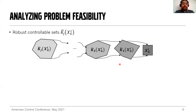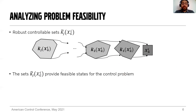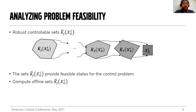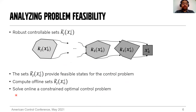The intuition behind robust controllable sets is: for a certain goal set XG, the J-th robust controllable set K-tilde is the set of admissible states for which an admissible control input exists that can robustly control the states to enter the goal set XG in at most J steps, for all possible sequences of admissible disturbances. These robust controllable sets provide feasible states for the control problem, and we propose to compute them offline using existing methods for linear systems with polytopic constraints. Once the feasibility analysis is successful, we propose to solve online a constrained optimal control problem to obtain the control sequence that achieves the control objectives.